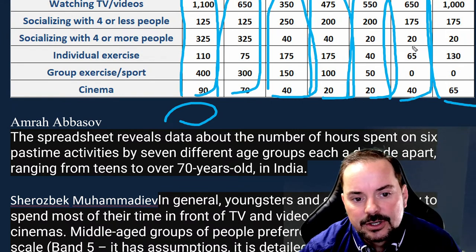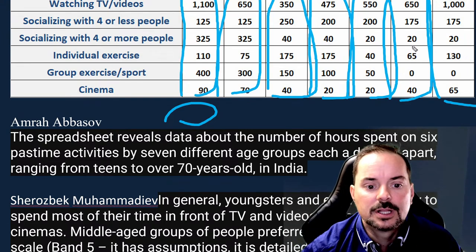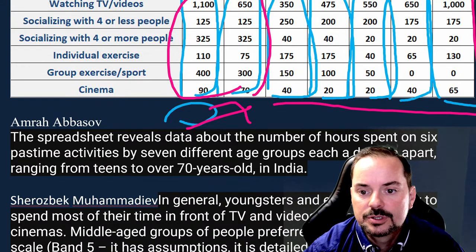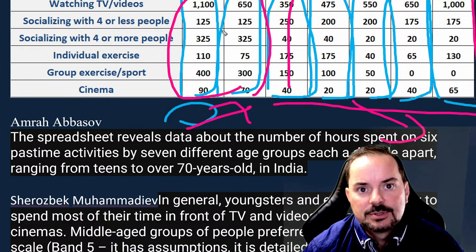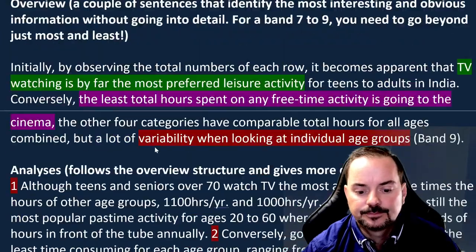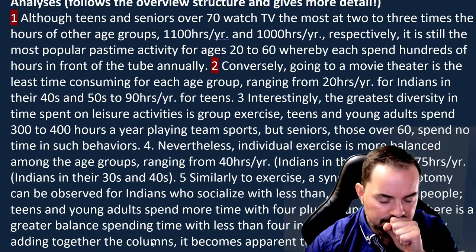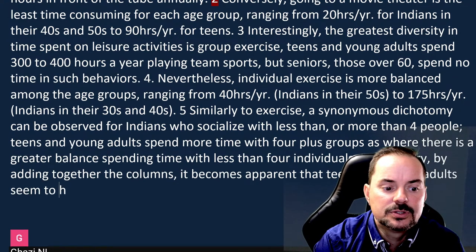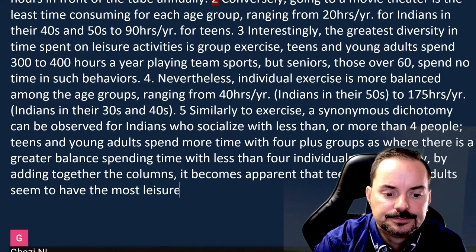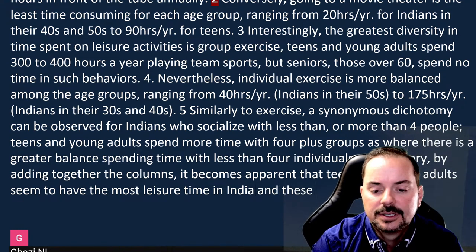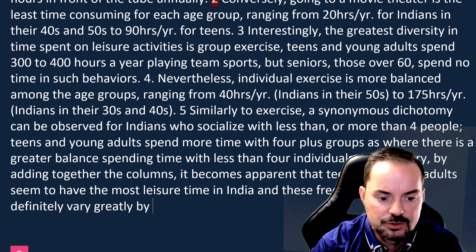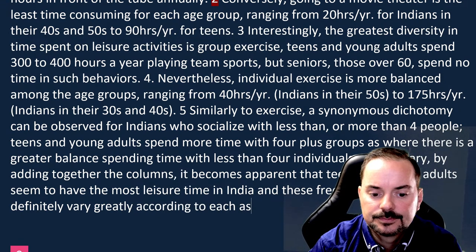In summary: 'By adding together the columns, it becomes apparent that teens and young adults seem to have the most leisure time in India, and these free time activities definitely vary greatly according to each age group.' Summation is really useful with tables — it makes sense to do a rough count or rough estimate of the rows and columns.